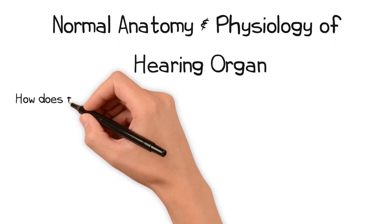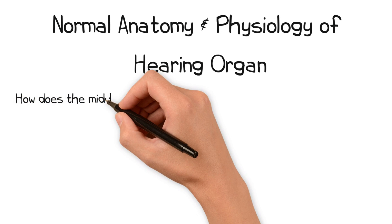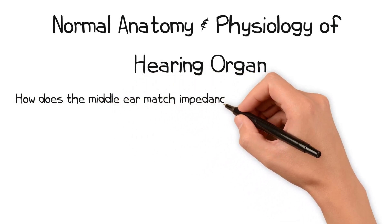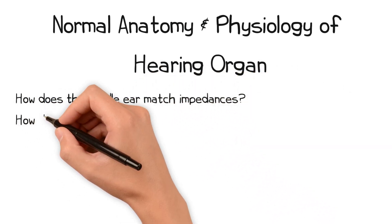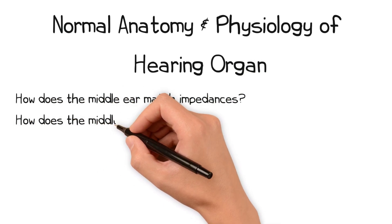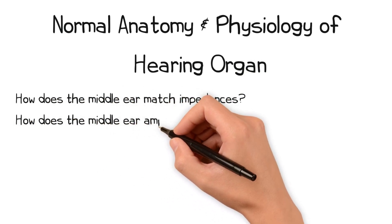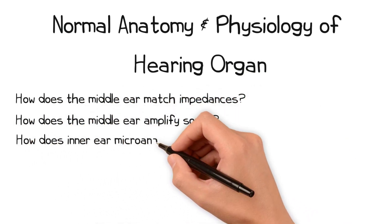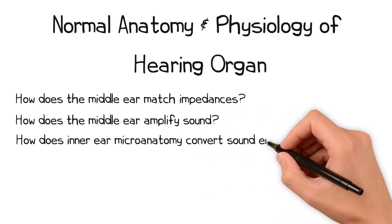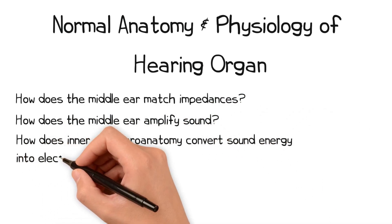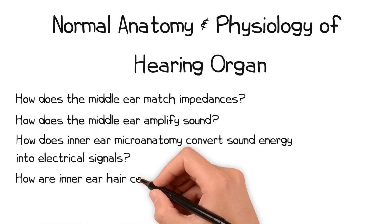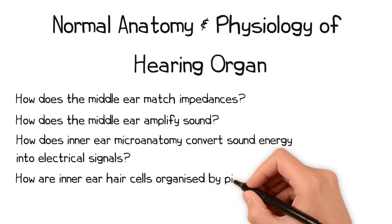How does the middle ear match impedances between the external ear and the perilymph? What are the mechanisms through which the middle ear amplifies sound pressure admitted into the inner ear? How does the micro-anatomy of the inner ear convert sound energy into electrical signals? And how are inner ear hair cells organised according to pitch?